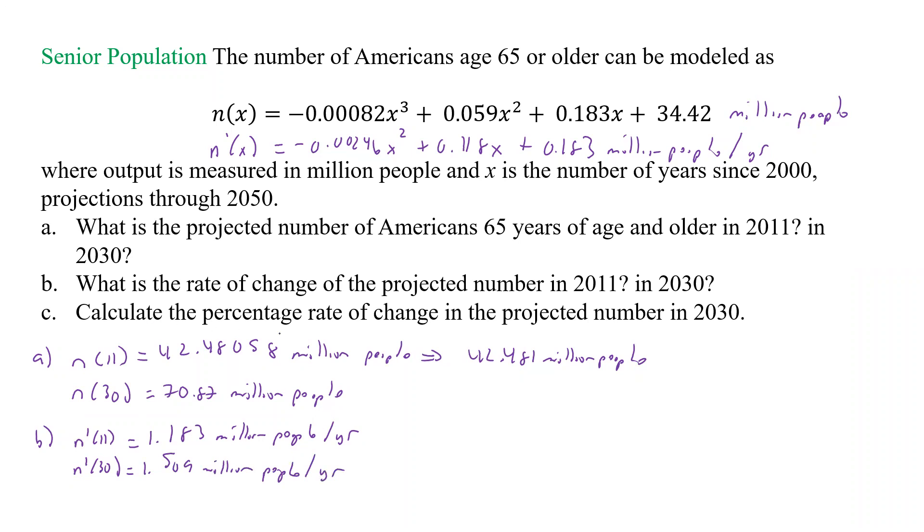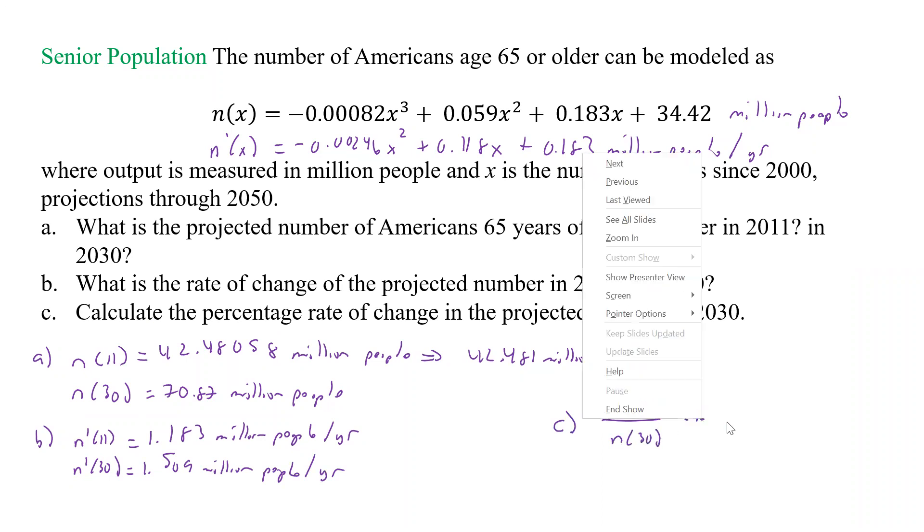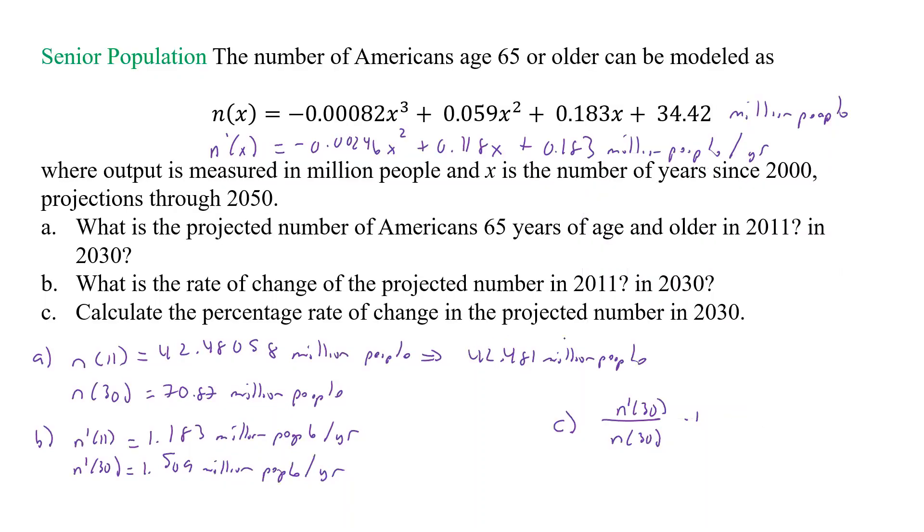And now what it says is calculate the percentage rate of change in the projected number in 2030. So for C, basically, I'm going to look for n prime of 30 over n of 30 times 100%. So n prime of 30 was 1.509 divided by n of 30 was 70.87 times 100. So I get 2.13%, and that would be the percent rate of change in 2030.